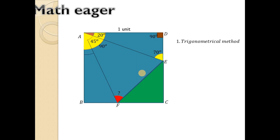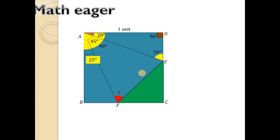Then the remaining angle will be 90 minus 45 minus 20 degrees, which is 25 degrees. Similarly, B is also a corner of this square, so that value is also 90 degrees, and the remaining angle will be 65 degrees.